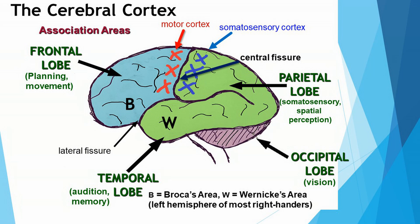Behind the central fissure you see the parietal lobe — a word that students mispronounce frequently; try saying it: parietal, the parietal lobe. This lobe of the brain is responsible for somatosensory and spatial perception. Look at the first four letters of somatosensory — it's 'soma' — and you remember that the soma is the cell body of a neuron, so that will help you remember the functions of the parietal lobe: somatosensory, bodily sensations, as well as spatial perception — where your body is in space.